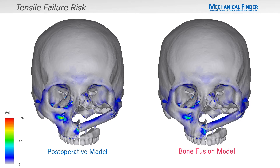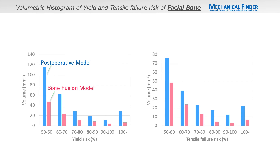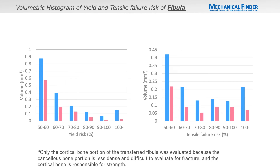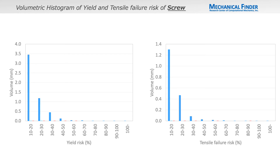The same findings are true in terms of tensile failure risk. In the postoperative model, a high-risk area was found localized at the inferior margin of the plate hole on the maxillary bone side. In the bone fusion model, it is distributed over the entire junction surface. Comparison of volumetric histograms of yield and tensile failure risk of facial bone showed higher risk for the postoperative model in all risk bands. The same is true for the fibula, and the difference was even more pronounced in the plates. Screws are similar to plates.